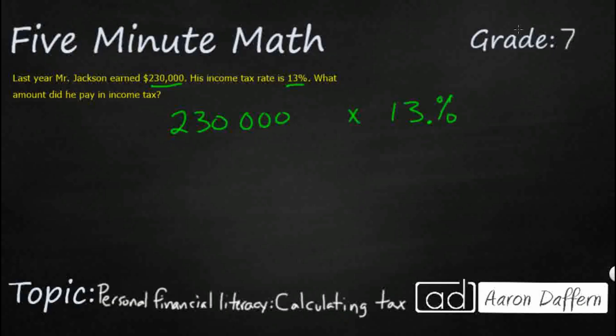So how do we change the percent into a decimal? Well, if there's no decimal in the percent, put it at the end. Once, twice. So it's 0.13. So let's just go ahead and multiply that.